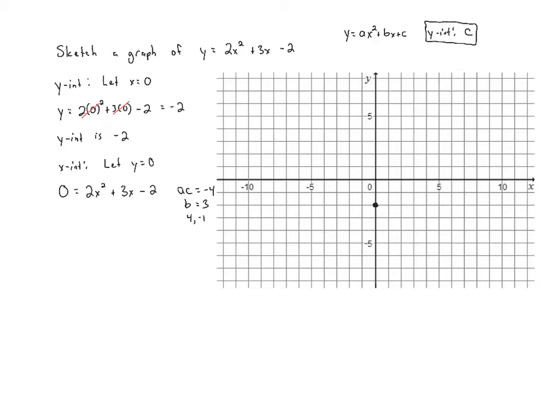When we're using the AC method once we find those numbers we can use them to split the middle term. So we're going to keep the 2x squared there but then this 3x is going to become 4x and then minus 1x minus 2. And once we've split the middle term we can finish factoring by grouping. The first group has a GCF of 2x and when we pull it out our leftovers are x plus 2. In the second group we can pull out a negative 1 also leaving us with x plus 2. So the factored form is going to be x plus 2 times 2x minus 1.